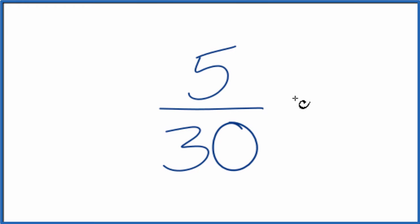To do that, we have to find a common multiple, something that goes into 5 and 30 evenly. I know that 5 goes into 30 six times, 5 times 6 is 30.